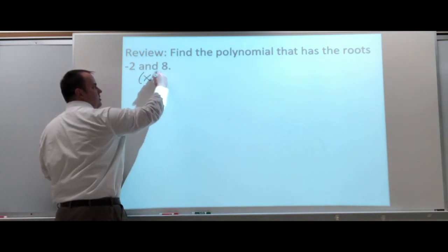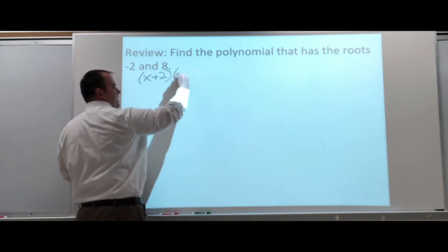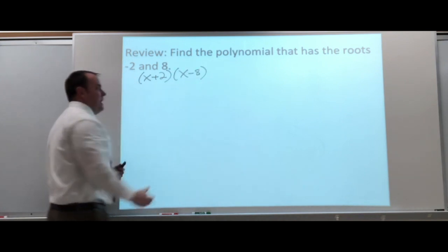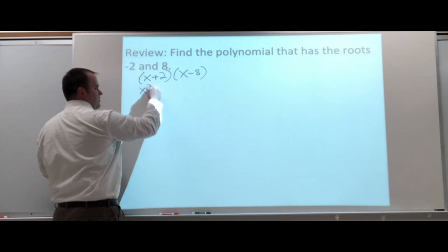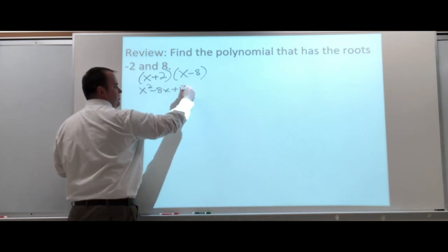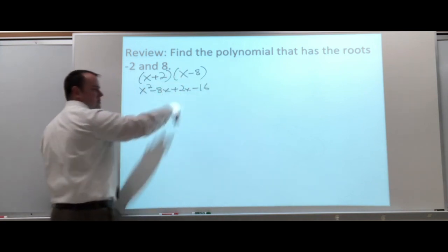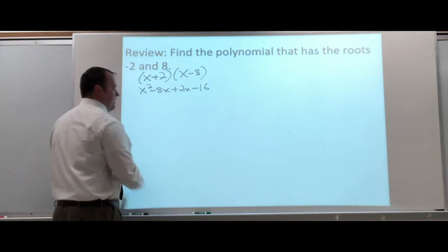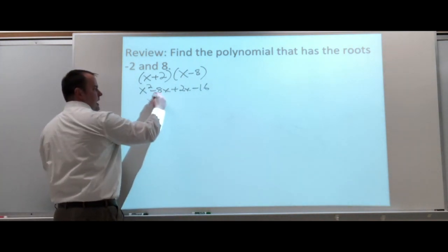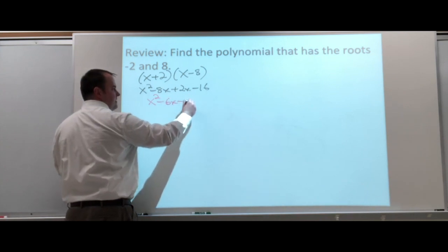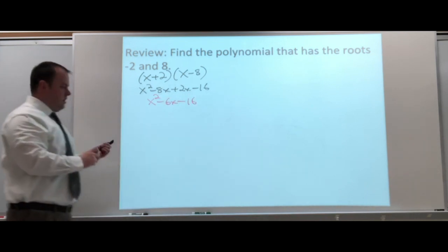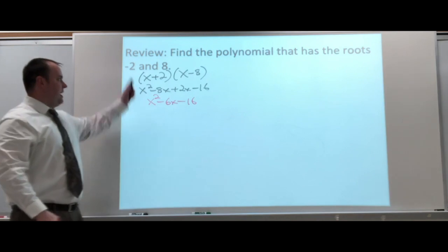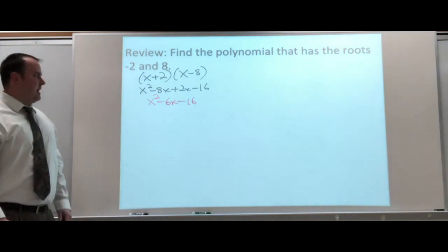And we multiplied through. So, X squared minus 8X plus 2X minus 16. That's just taking everything and multiplying it. And now that we simplify, X squared minus 6X minus 16 would be the polynomial that has those two solutions, negative 2 and 8.